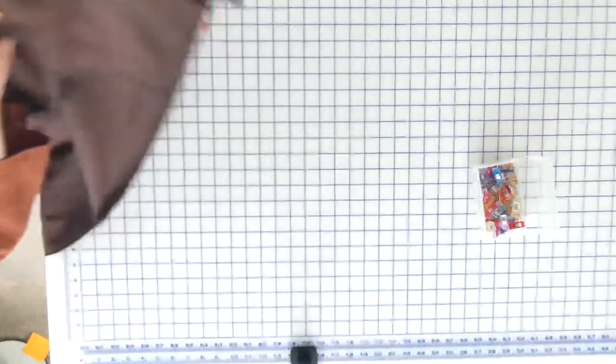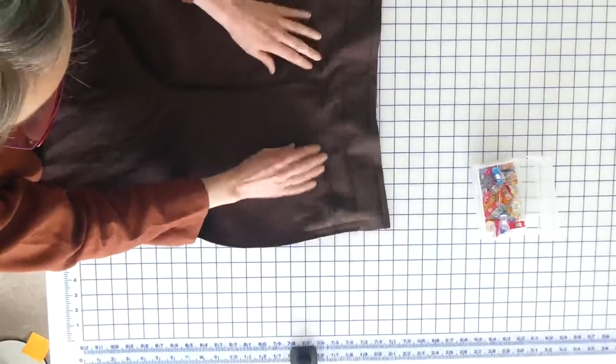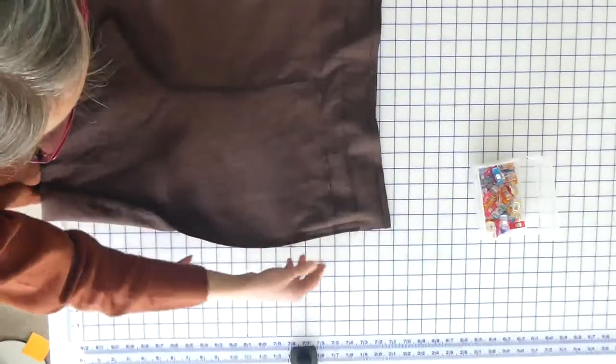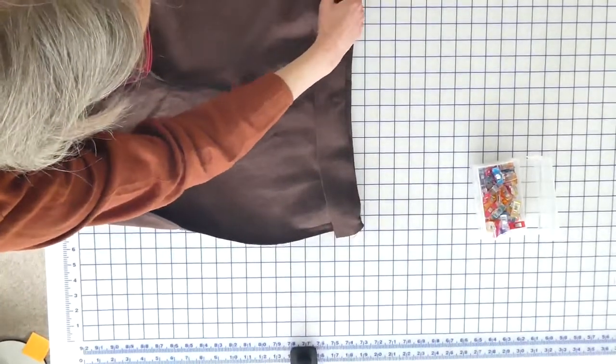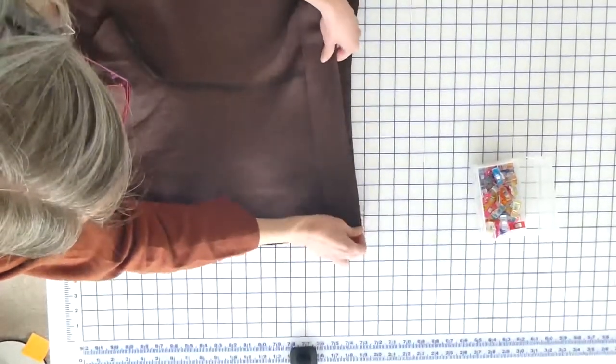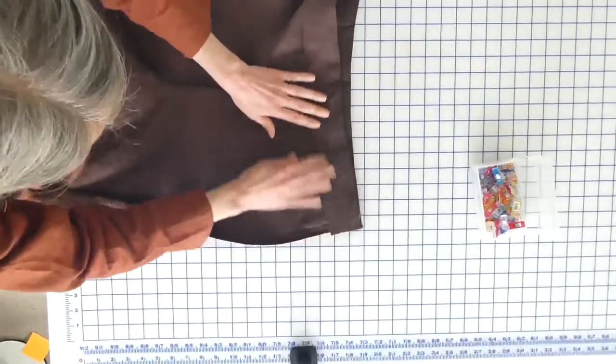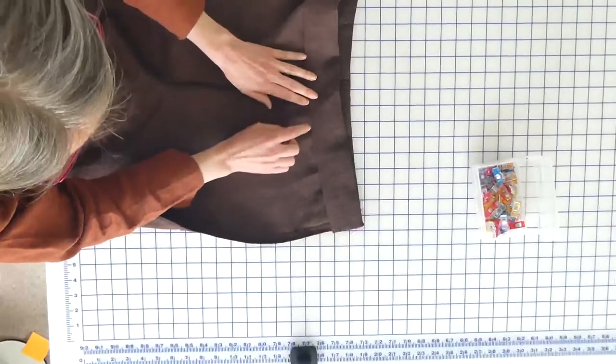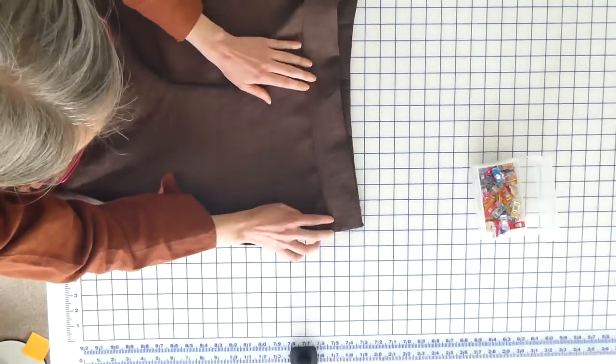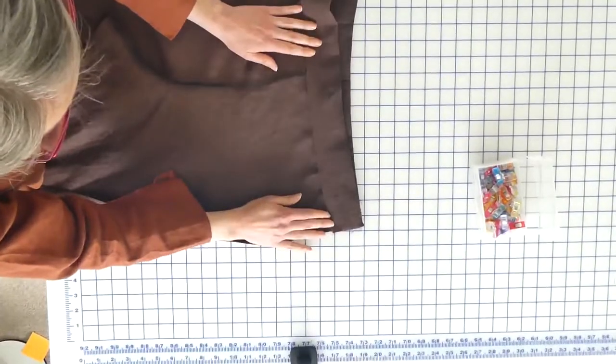And then on the back I have my seam nicely graded. When I test that this is all going to come together, I can see that I have enough space here for my elastic waistband to go in and for me to catch the bottom of this to close it off, which is what I'm going to show you how to do.